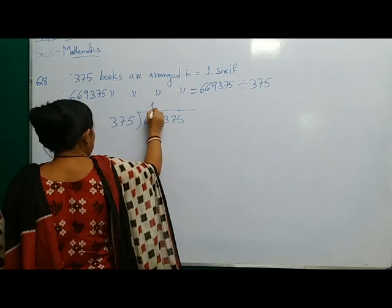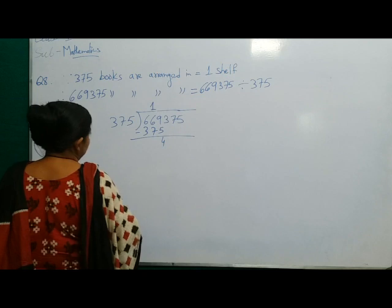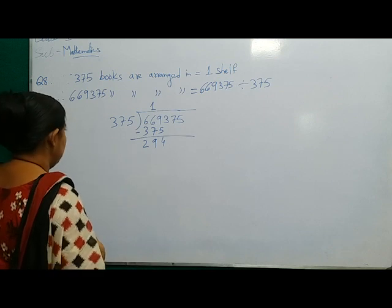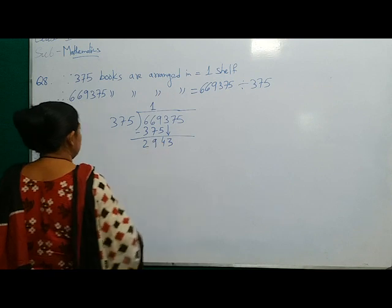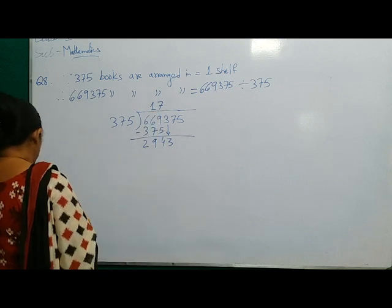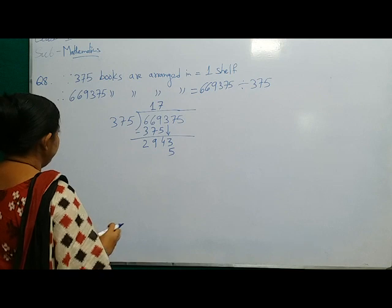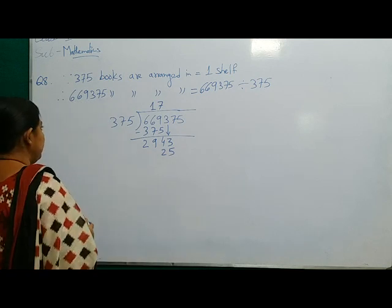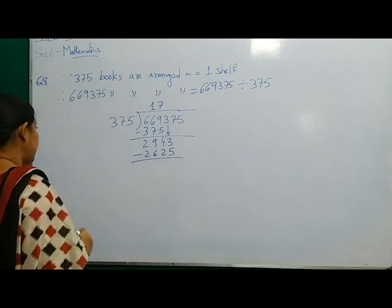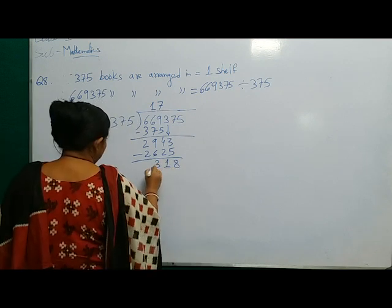Now divide. 1 times 375 will be 375. Subtract: 4, 9, 2. Now this 3 will come down. Now do with 7. 7 times 5 are 35 carry 3, 7 times 7 are 49, 50, 51, 52 carry 5, 7 times 3 are 21, 22, 23, 24, 25 and 26. Subtract it will be 8, 1, 3, 2 minus 2 is 0.